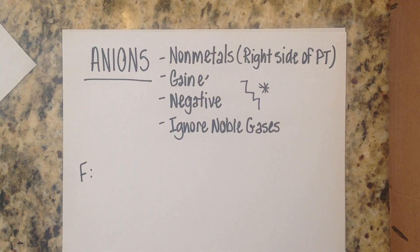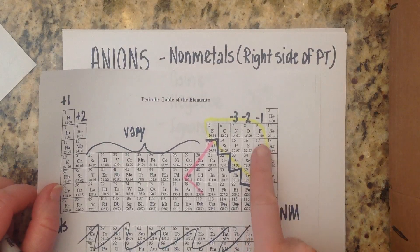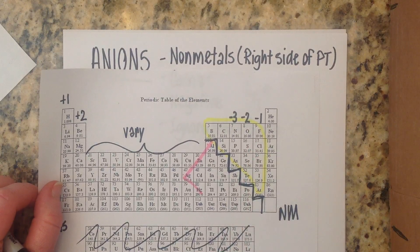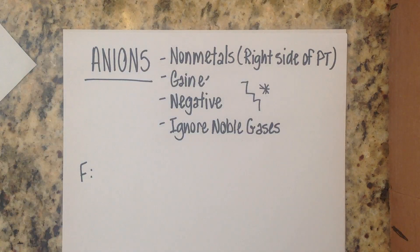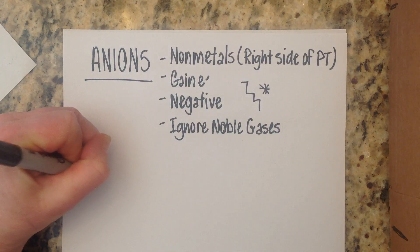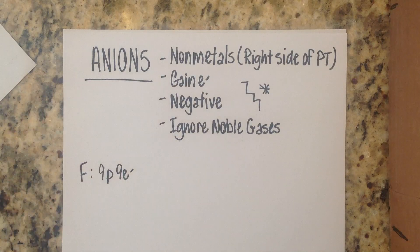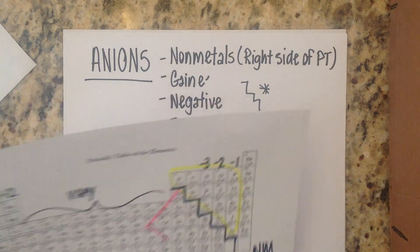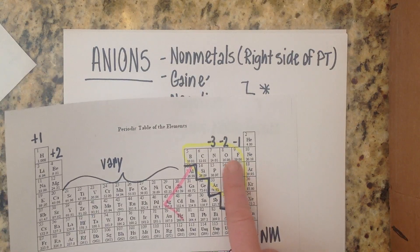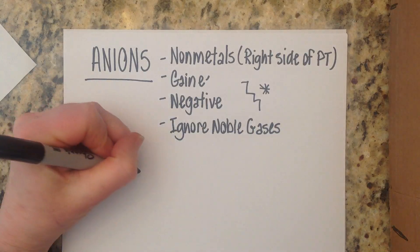So we're going to start with fluorine and when you look at the periodic table you can see that fluorine is right here and it has an atomic number of nine. That means that fluorine has nine protons, nine electrons.